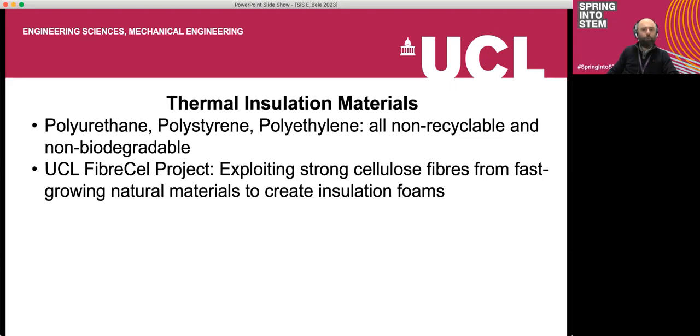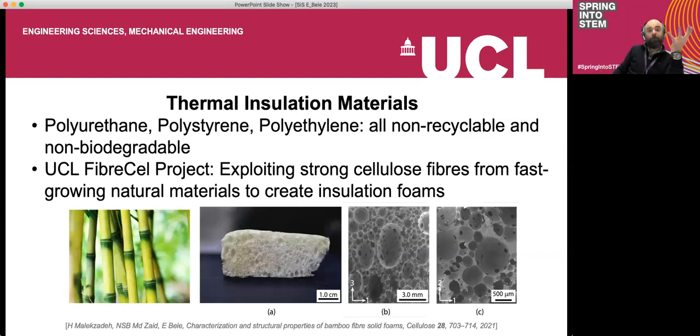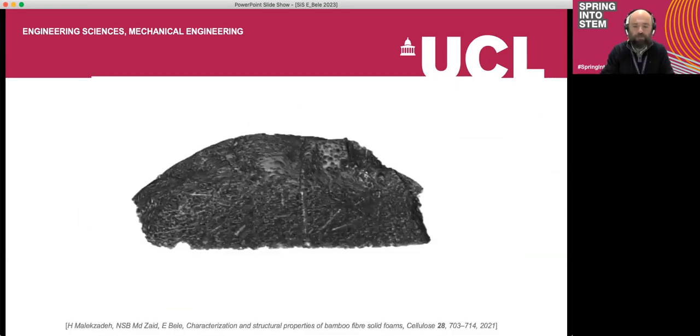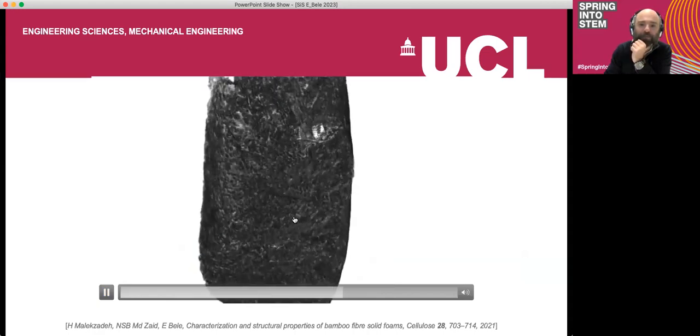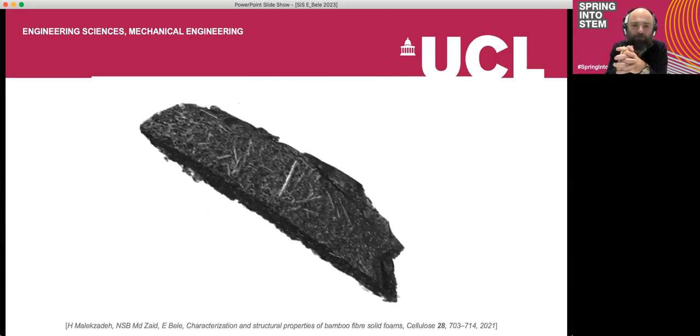We're looking at exploiting strong cellulose fibers from bamboo. This example is bamboo made of fibers, exploiting their strength to create foams like this one. This is very interesting because it's biodegradable. If we can control the size of these pores inside, we can make it thermally insulating and look at manufacturing feasibility to make it as affordable as current plastic foams. You can see details about the pores and fibers and how they work together to create this porous structure.